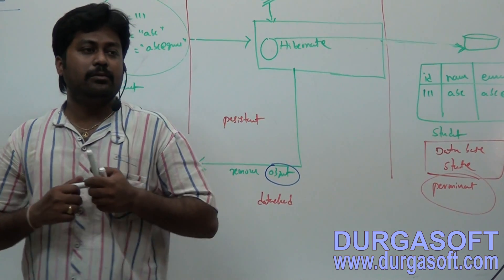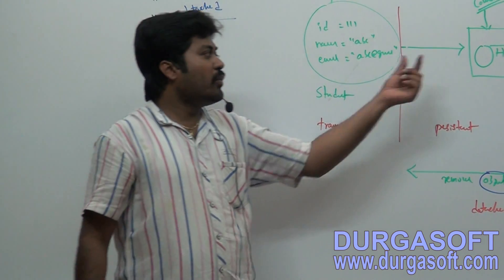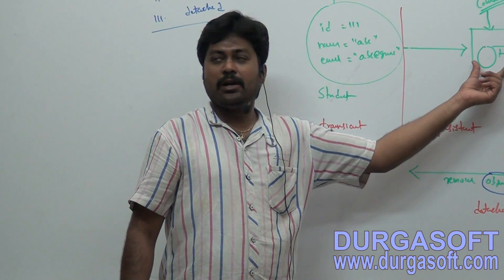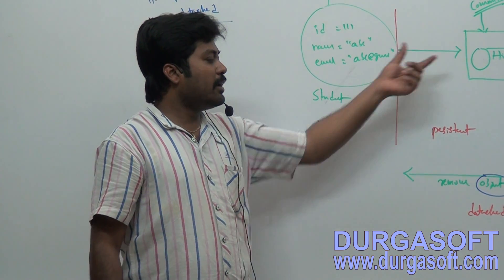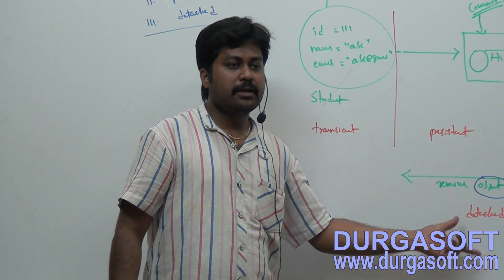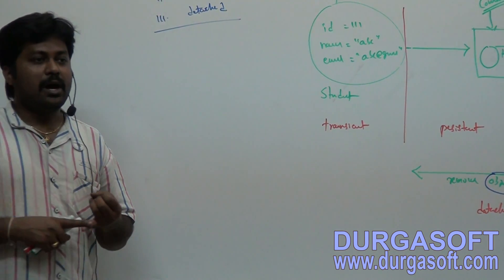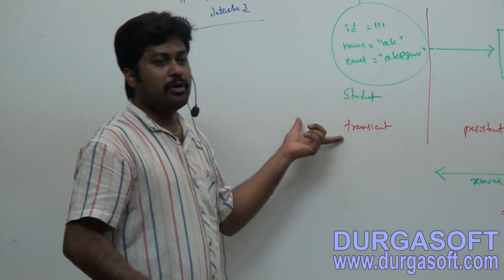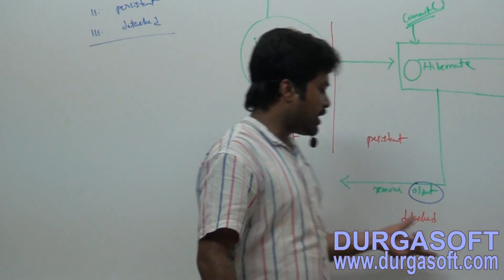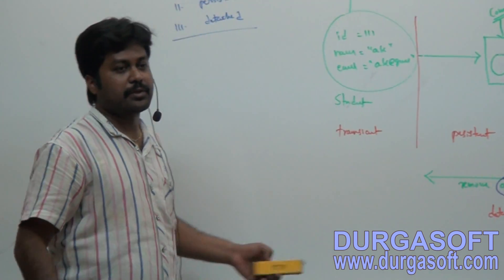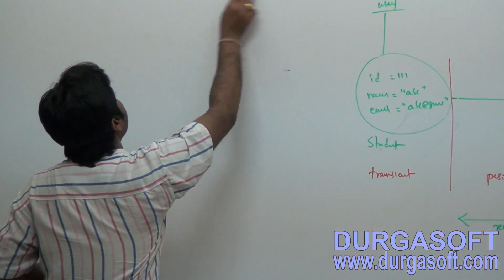Permanently it will store your data into tables. Whatever object we added to Hibernate, if you want to remove that object from Hibernate, then that removed object you can call a detached object. So I will go through a basic application where I will show you how to create an object, how to make it persistent, how to make it permanent, and finally how to detach it.